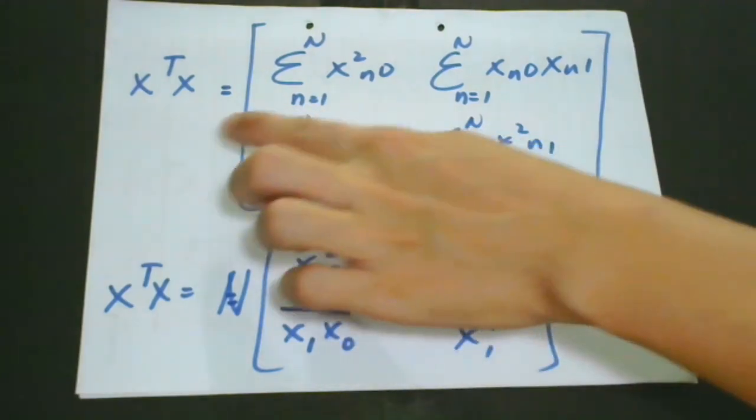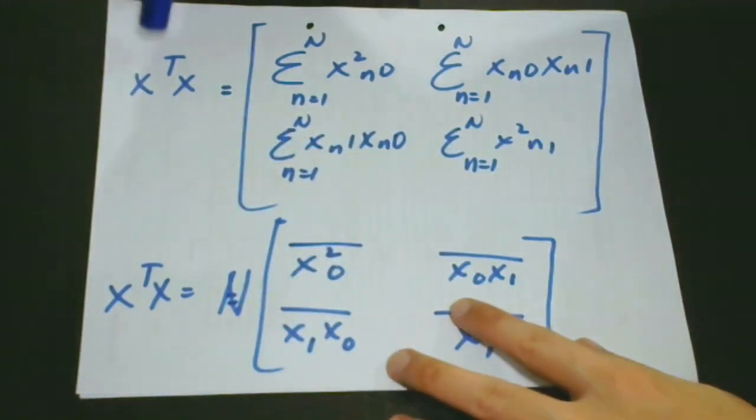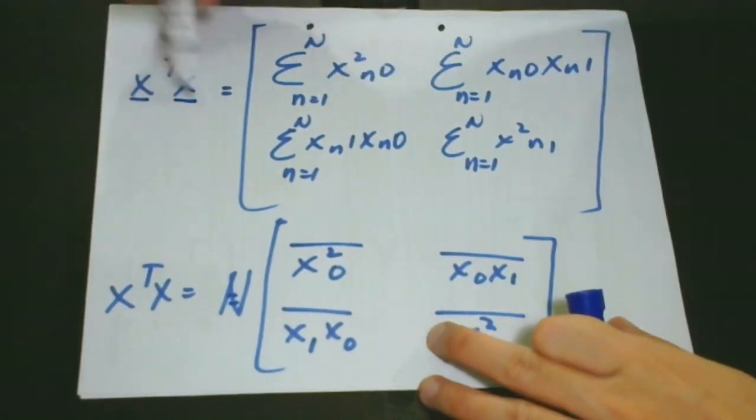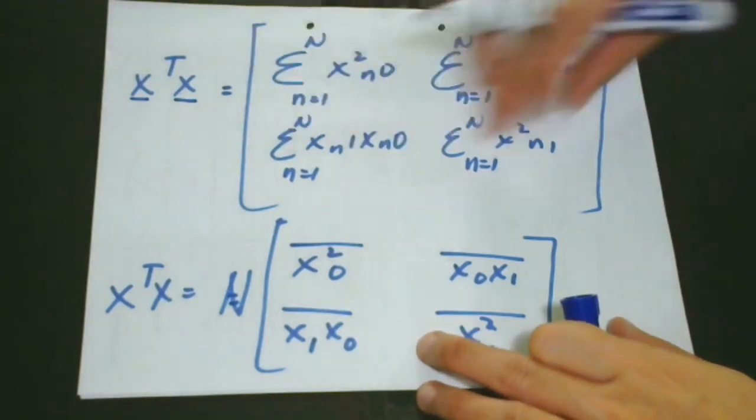So here, this shows that we first transpose our X. Our X here is actually our matrix, and then the X here is the original matrix. And then when we do this process, we get this result.